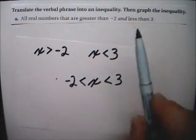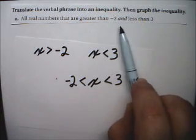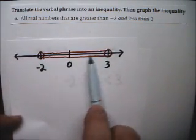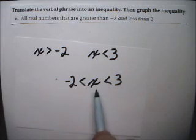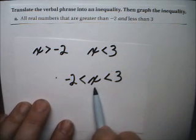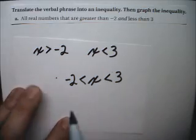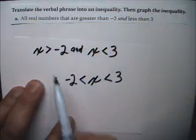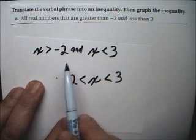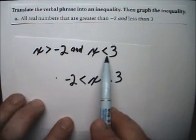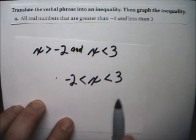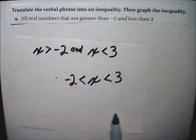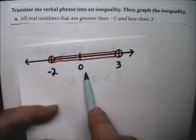So when it's an AND condition, and that'll be indicated by a graph like this in between two numbers, then you can put them together into a compound inequality, just one inequality. So if this is what you have, X is greater than negative 2 and X is less than 3, then you can put them together like this, and the graph will look like this.